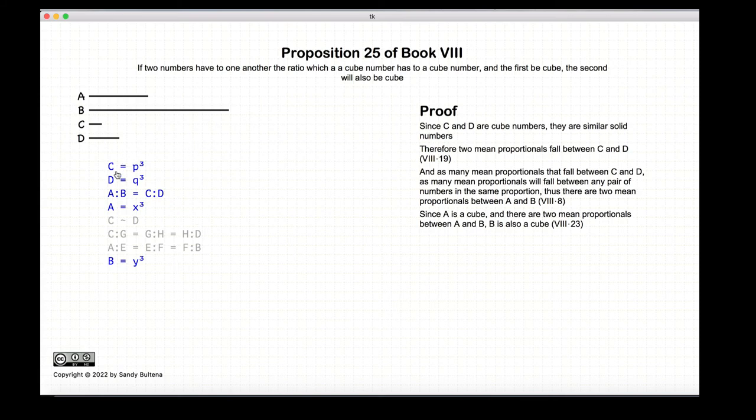So again, if C, D, and A are all cubes, and if the ratio of A to B is equal to the ratio of C to D, then B is also a cube.